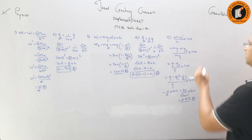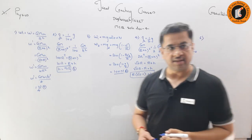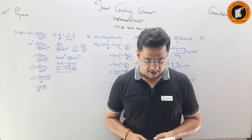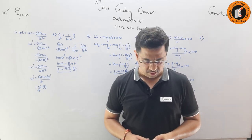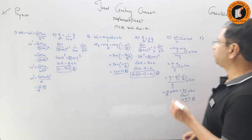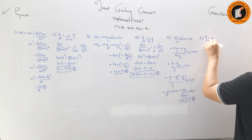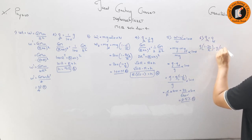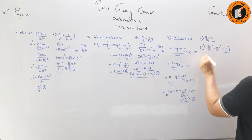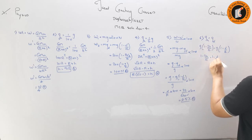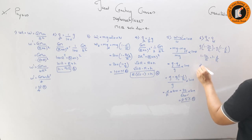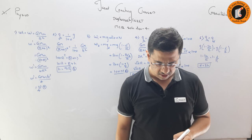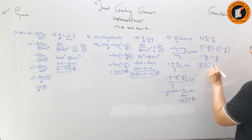Question number 6, from CET 2015: If g_h and g_d are the accelerations due to gravity at height h above and depth d below the earth's surface, and g_h = g_d, what is the relation? Using g·(1 - 2h/R) = g·(1 - d/R), g cancels, giving 1 - 2h/R = 1 - d/R, so d = 2h. The answer is option D.